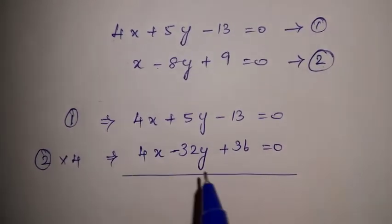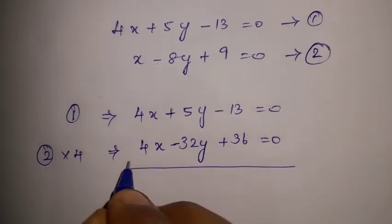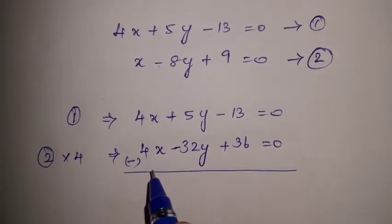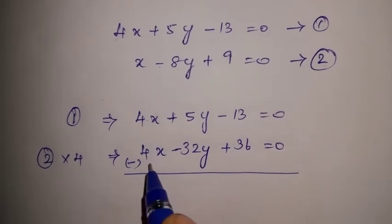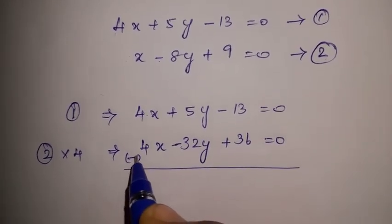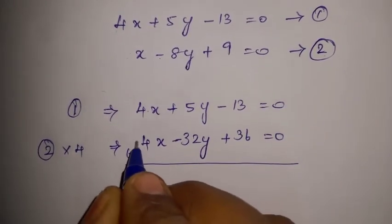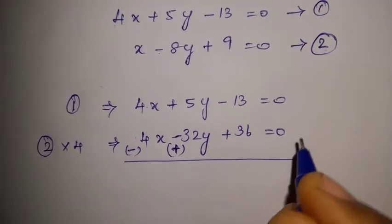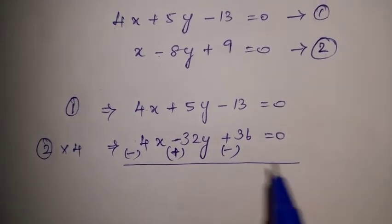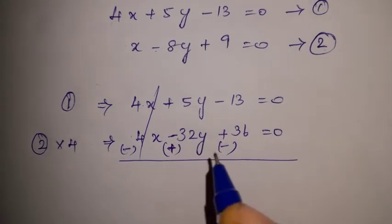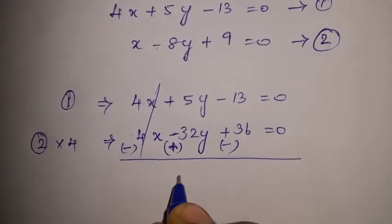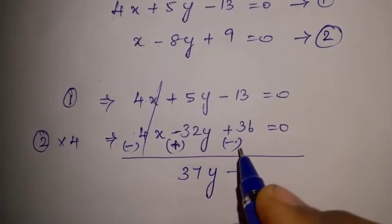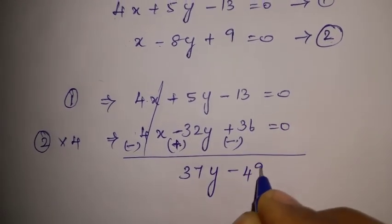Since the x coefficients are now the same, we subtract the second equation from the first. We change the sign of the second equation — plus becomes minus, minus becomes plus — and then add the two equations together to eliminate x.